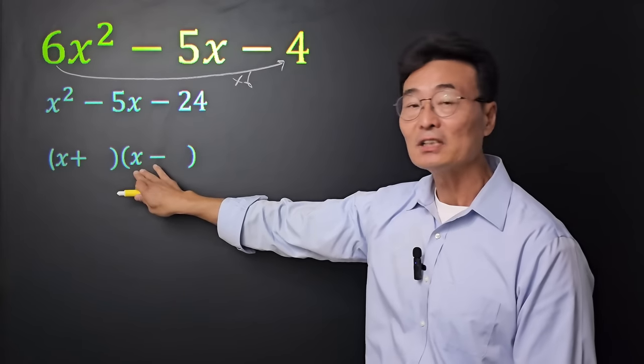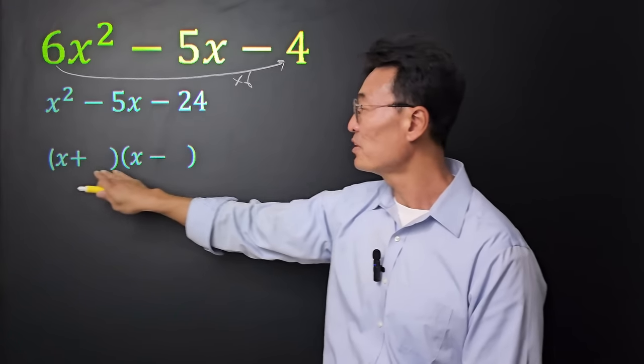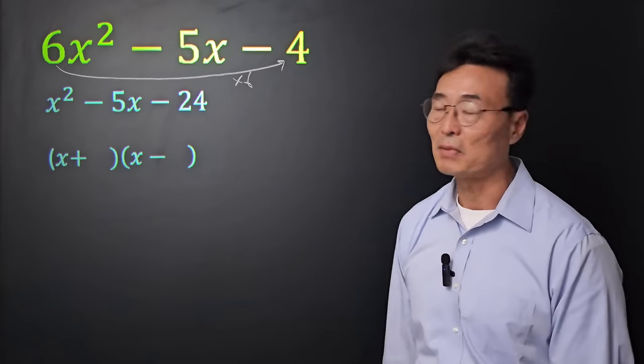And again, we get the x in the front. However, because this is negative, the third term, it's going to be plus minus. Again, whenever the third term is negative, we get one plus and one minus.